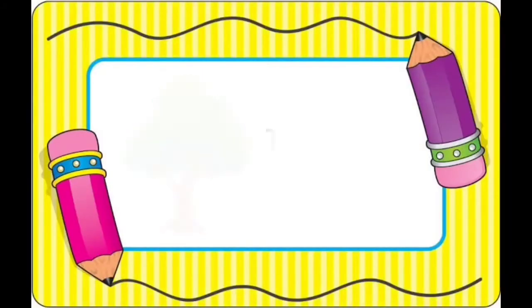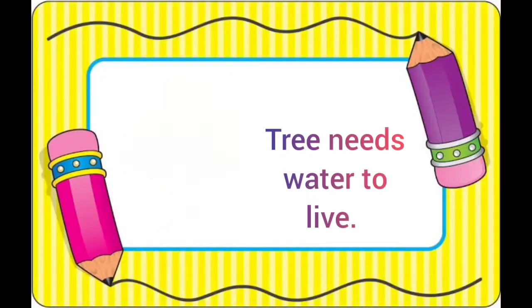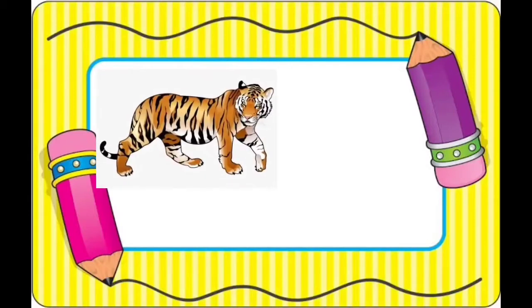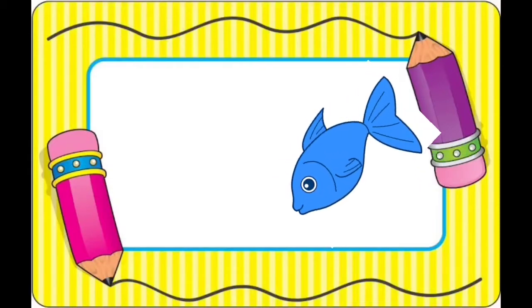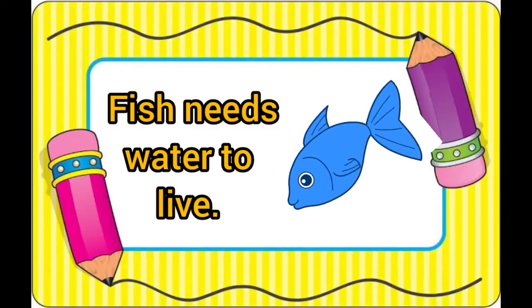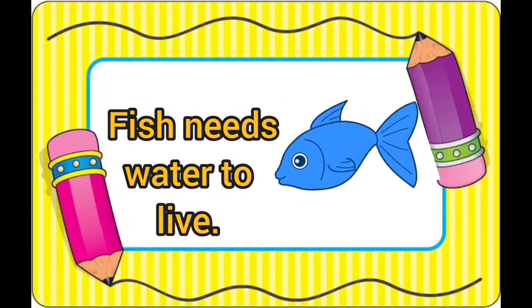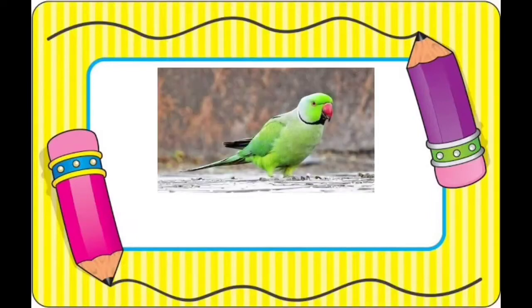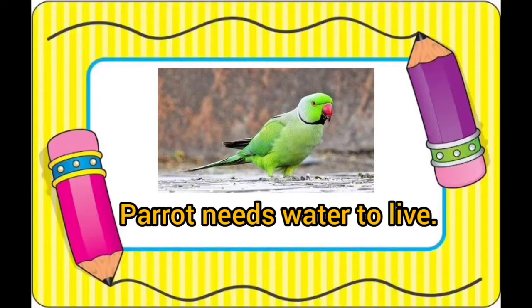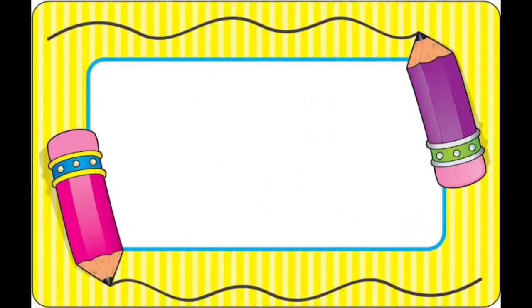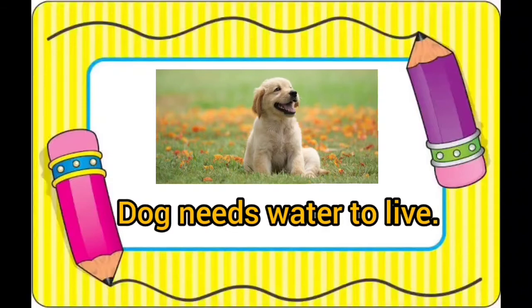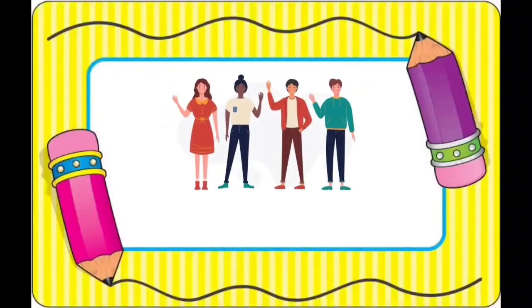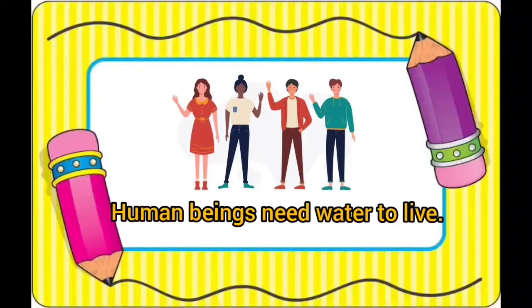Look, this is a tree. Tree needs water to grow and live. See, this is a tiger. Tiger is an animal and it needs water to live and to survive. See, this is a fish. Fish also needs water. Fish can swim and live only in water. Look, this is a parrot. It is a bird. Parrot also needs water to live. This is a dog. Dog also needs water to live. Human beings also need water to live and to survive.